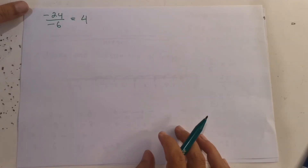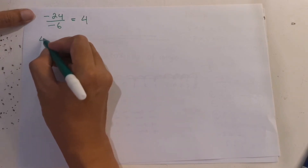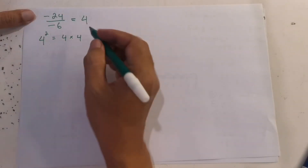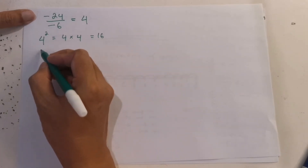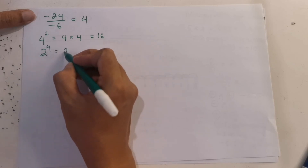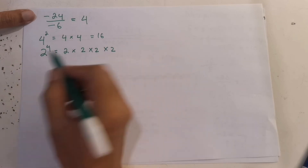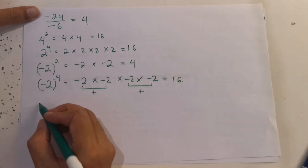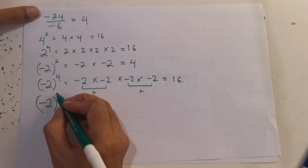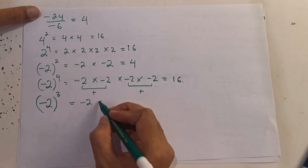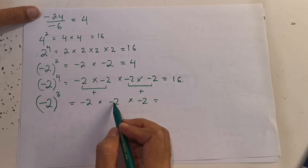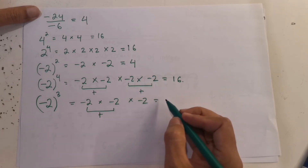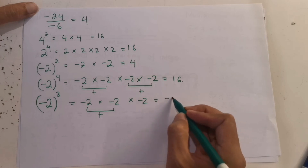Let's move to the exponent operation. We have 4 exponent 2, which means 4 times 4 — two times — so the answer is 16. And 2 exponent 4 means 2 times 2 times 2 times 2 — four times — so the answer is 16. What about negative 2 exponent 3? It means negative 2 times negative 2 times negative 2. Negative times negative is positive, then positive times negative is negative. So the answer is negative 8.